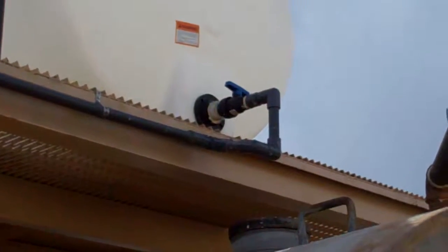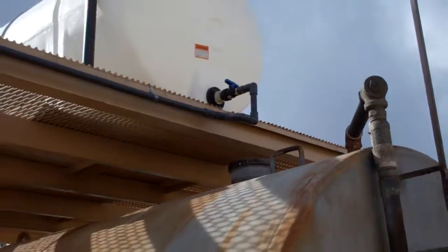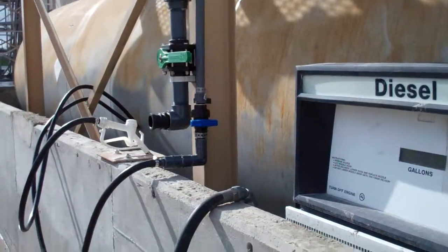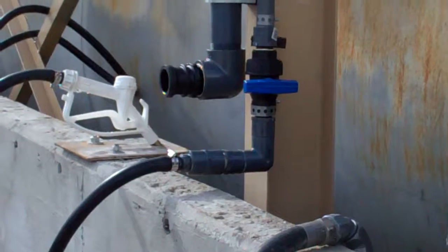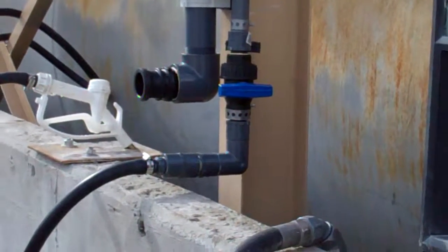We have ball valve shutoffs both at the top of the tank, and in case of somebody running over a hose, it also has a secondary ball valve attached right where the hose and nozzle attach to the DEF tank.